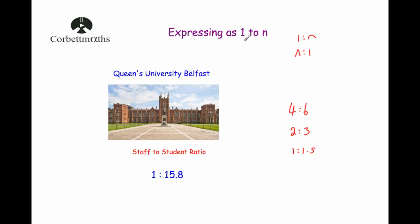Whenever you're expressing a ratio in the format 1 to n, more likely than not one of the numbers will be a decimal. It doesn't have to be — it could be 1 to 8 — but that would be the same as just cancelling down the ratio. It could be something like 1 to 9.1. This format is really useful for comparing ratios.